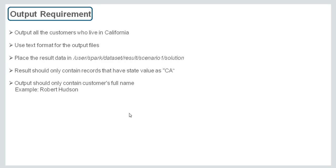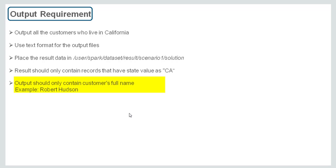The output requirement says to output all the customers who live in California. Use text format for the output files and place the result in a specific HDFS location. The result should only contain records where the state value is CA, and the output should only contain the customer's full name. So we have multiple sub-requirements: read a tab-delimited file, filter records where customer state equals CA, derive full name from first and last name, and save back to HDFS in text format.